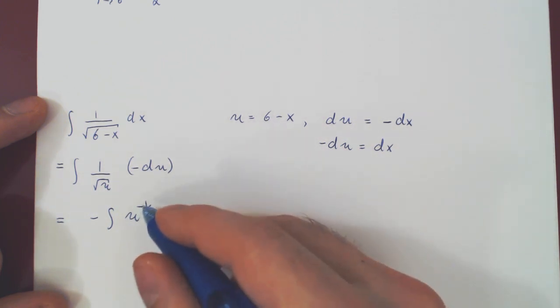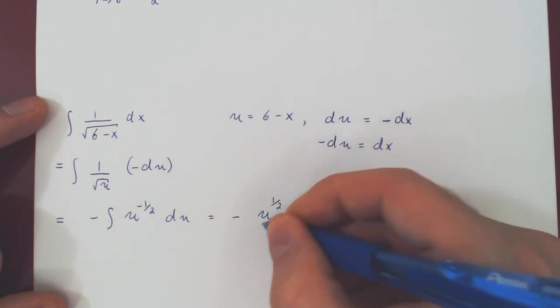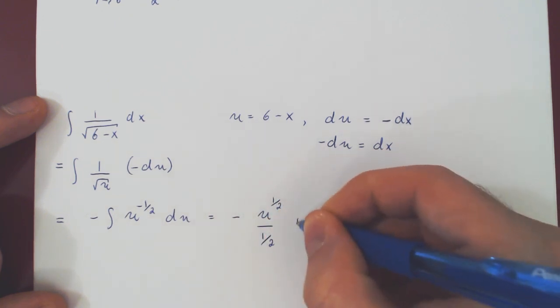And from the power rule, we add 1 to the exponent. Negative 1 half plus 1 is positive 1 half. We divide by the new exponent, and we add c.